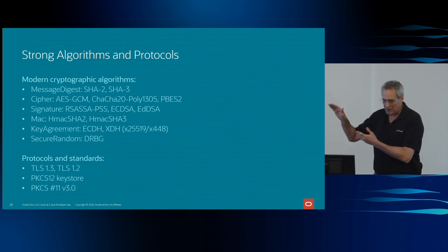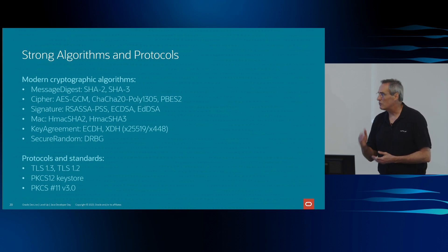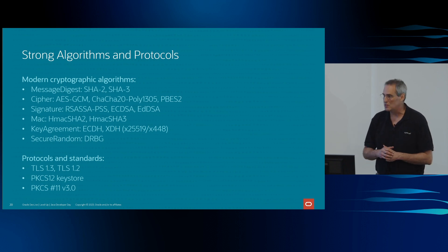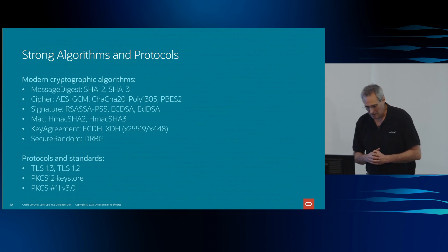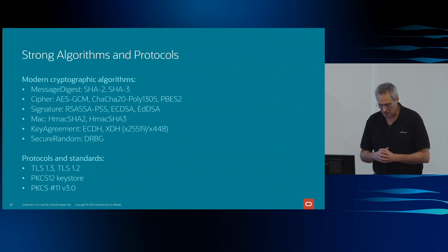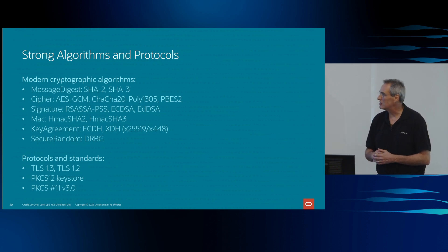Above these cryptographic primitives, we also have protocols built on top of them. We have TLS 1.3, the most recent version of TLS. Currently TLS 1.3 and 1.2 are our main enabled protocols. We also use PKCS12 as the default keystore type in the JDK, using PBES2 based on SHA-2 and AES. And we have bumped our PKCS support up to level 3.